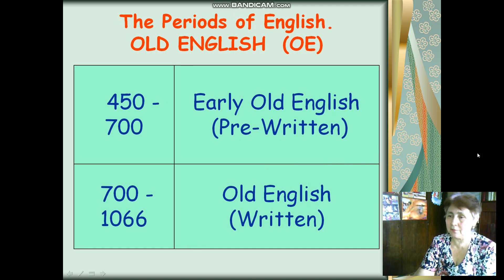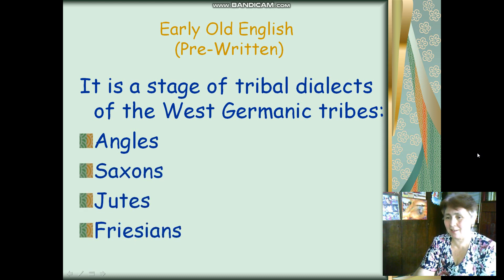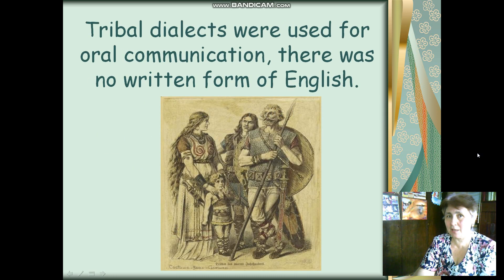The Old English period is also divided into two periods. The pre-written period, also known as pre-historical, lasts from the 5th century till the end of the 7th. It is a stage of tribal dialects of the West Germanic tribes — Angles, Saxons, Jutes, and Frisians. Tribal dialects were used for oral communication only. There was no written form of English in this period. The earliest monuments of Old English were made on hard material with the help of a special alphabet, also known as runic.